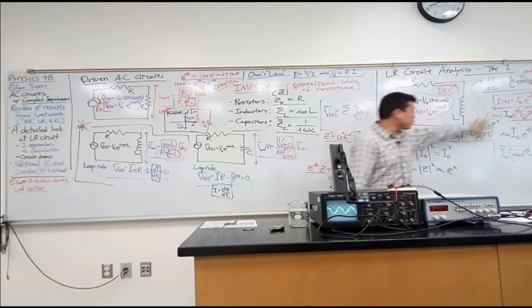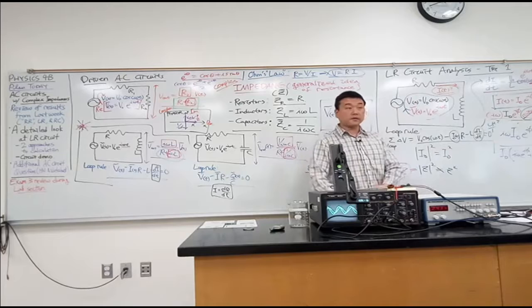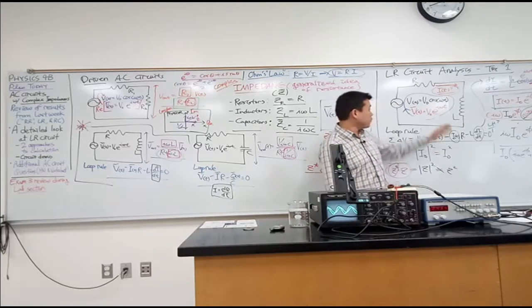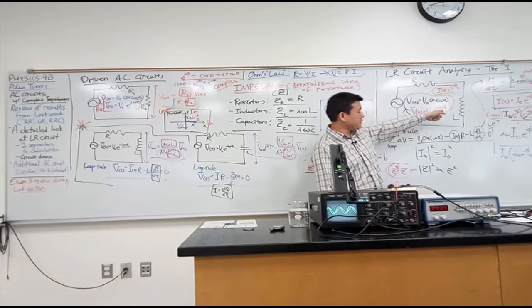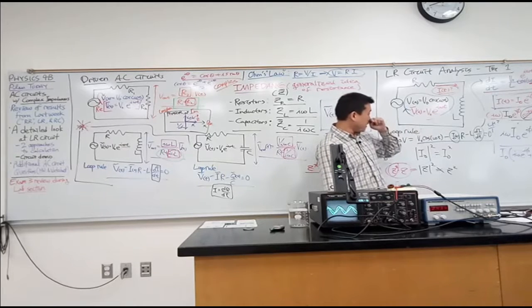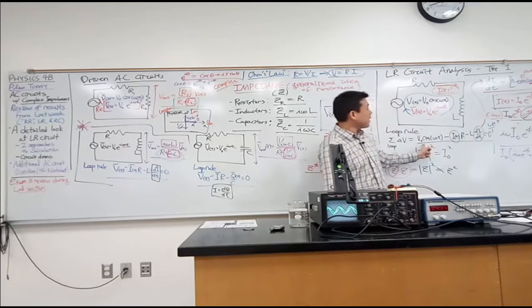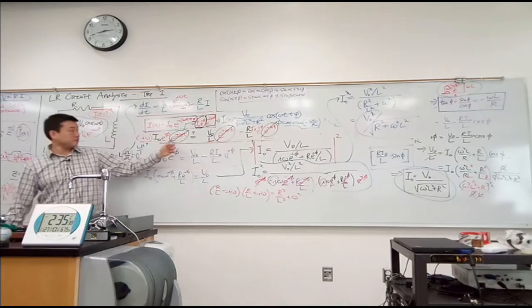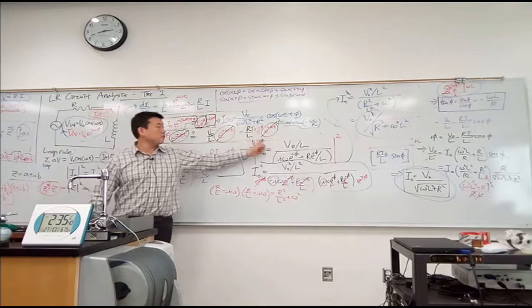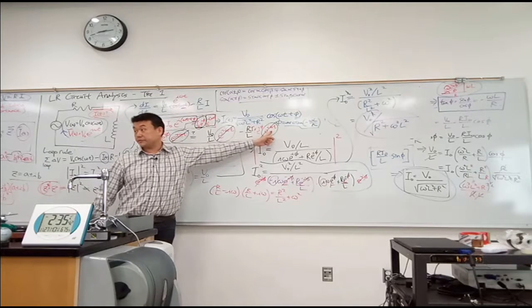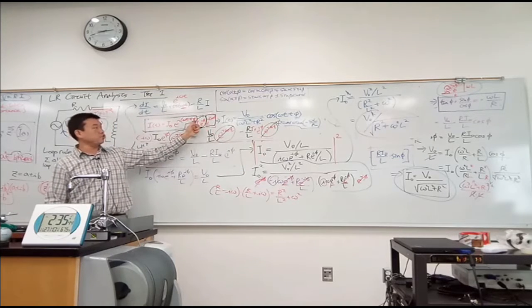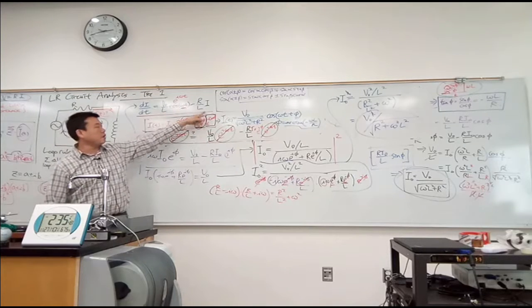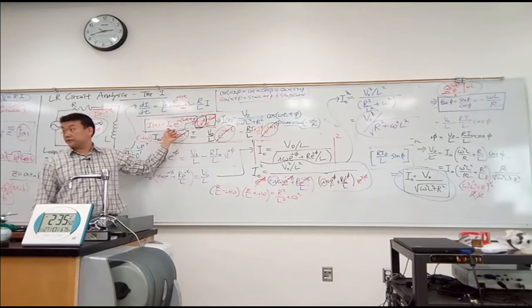So using this, you can actually work through all these circuits like you did a DC circuit. Because with the complex exponential, one of the things it does is it makes this calculus problem into an algebra problem. Because this e to the iωt term will almost always cancel out, and this phase factor you always absorb into the constant coefficient in front.